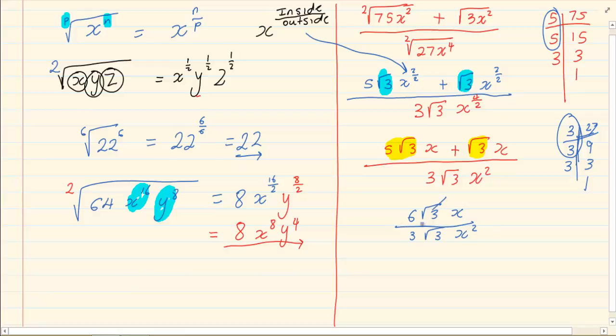Now you can cancel. 6 divided by 3 is 2. So that x can cancel with 1 x at the bottom. My final answer is 2 over x.